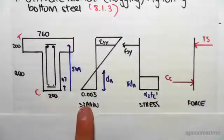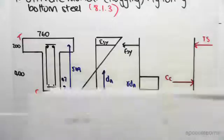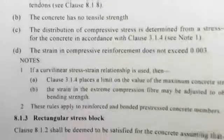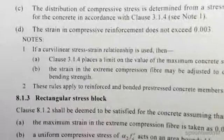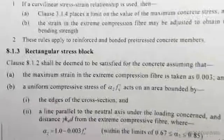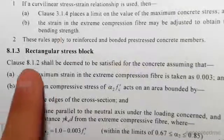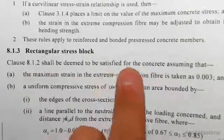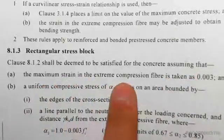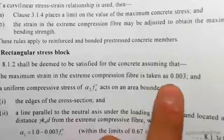Now we're going to first go to the strain diagram. So we go over to section 8.1.3 and I'm going to zoom in. In section 8.1.3 we have the rectangular stress block. It says the rectangular stress block deemed to satisfy for the concrete, assuming that the maximum strain in the extreme compressive fiber is taken as 0.003. So let's just deal with that first.